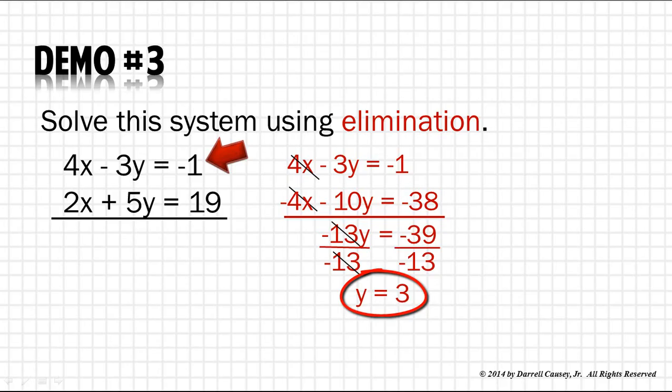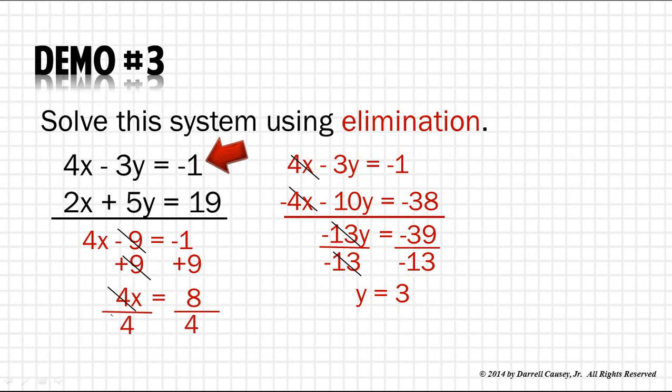Now that I know y equals 3, I'm going to choose the top equation and substitute 3 for y. I get 4x minus 3 times 3 equals negative 1. Do the multiplication and then add 9 to both sides. That gives me 4x equals 8. Divide both sides by 4, and x equals 2. Excellent. Our solution set is x equals 2 and y equals 3.